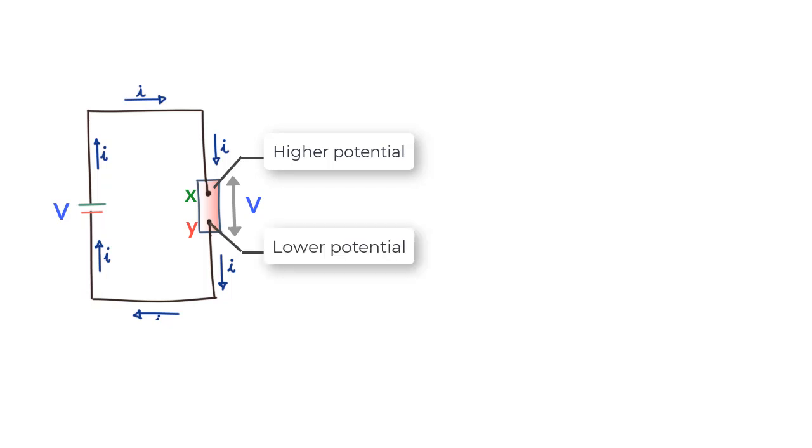This battery maintains a potential difference V across its terminals as well as across the ends of the device. Terminal X is at a higher potential than Y, and as a result we get a steady current in the circuit powered by the battery that starts moving the charges as soon as the circuit is closed.